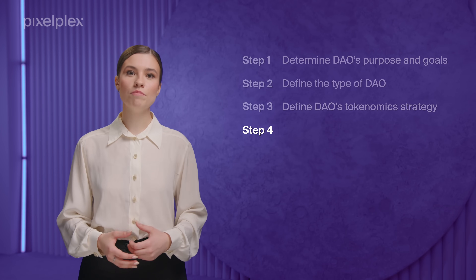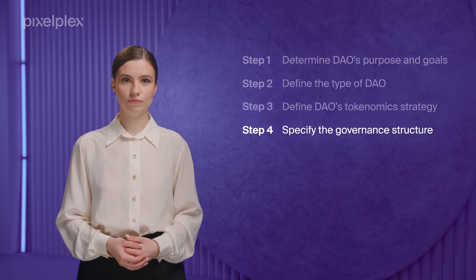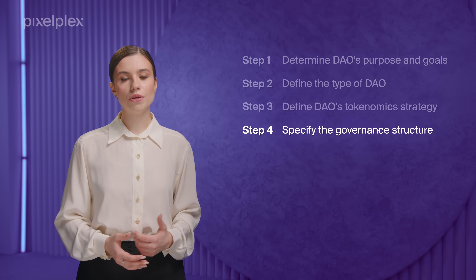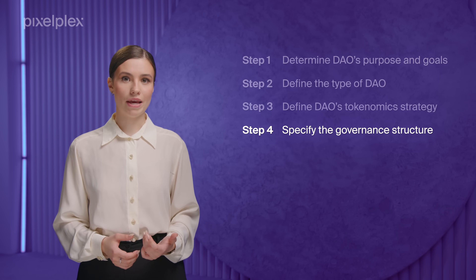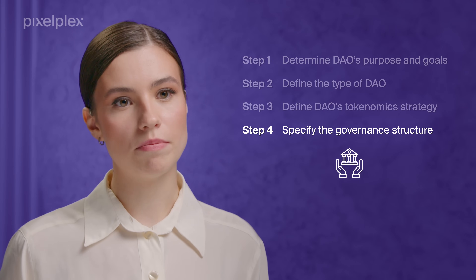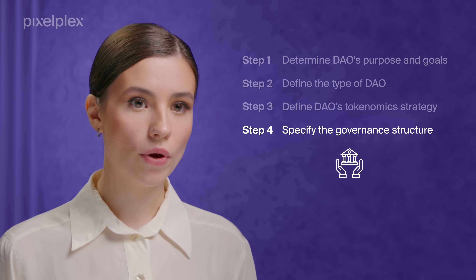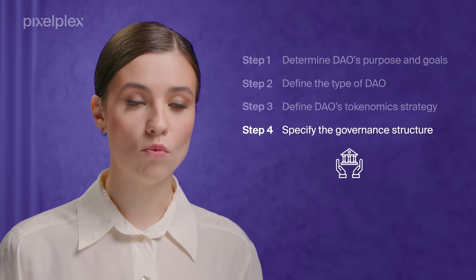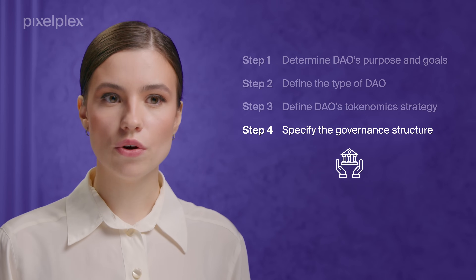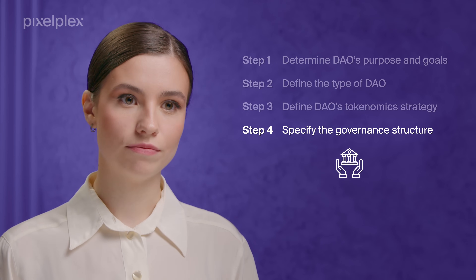The next important step is governance structure specification. Here you need to set the rules on how users can participate in the DAO's governance. The most common method is token-weighted voting, with one token representing one vote. Consequently, the more tokens a user owns, the more voting power they have.